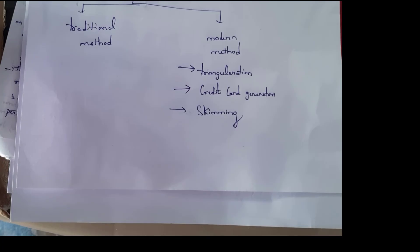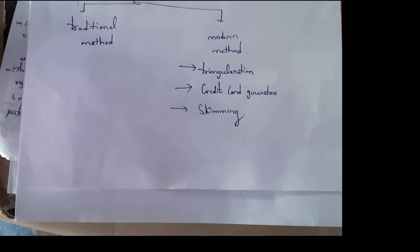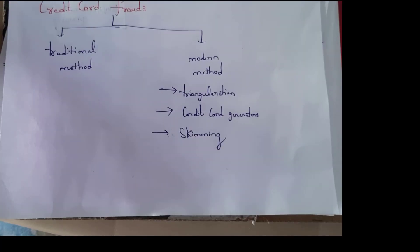In the modern method, the hacker tries to generate new credit cards or create new credit cards by copying data from one credit card to another. Modern method is further classified into three types: triangulation method, credit card generator, and skimming technique.